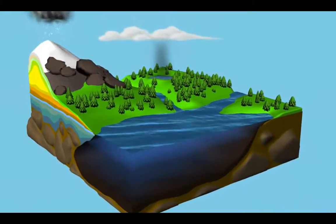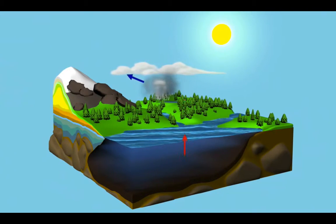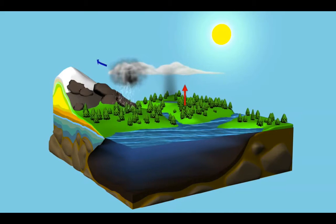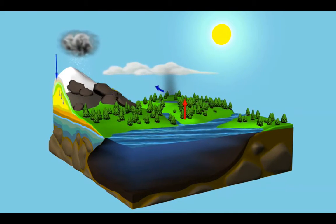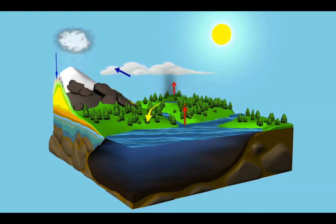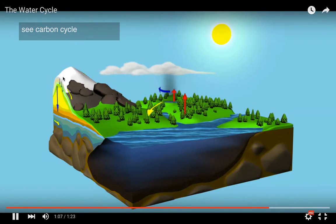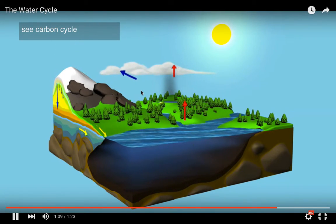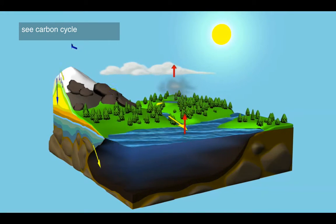And that water again, warmed by the sun, evaporates, condenses into clouds, precipitates, becomes precipitation - rain, sleet, snow, hail, sometimes dew. It can infiltrate or it can become runoff. This cycle's been happening for billions of years and I'm sure it will happen for billions more.